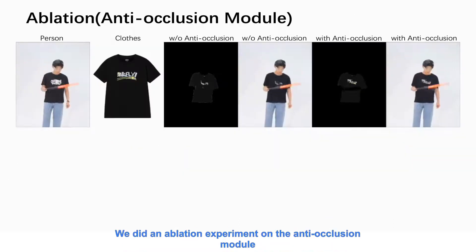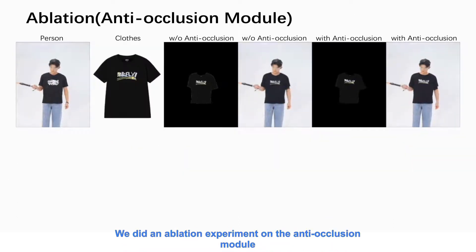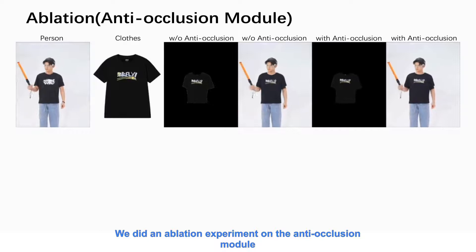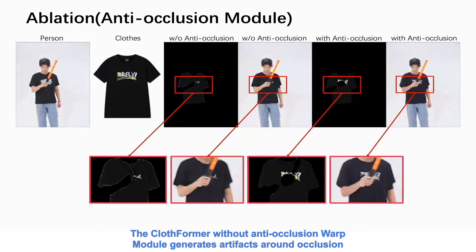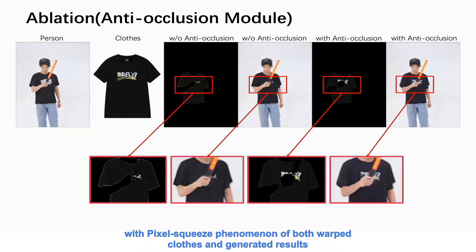We did an ablation experiment on the anti-occlusion module. Please note the pattern on the clothes. The Clothformer without the anti-occlusion warp module generates artifacts around occlusion with a pixel squeeze phenomenon in both warped clothes and generated results.